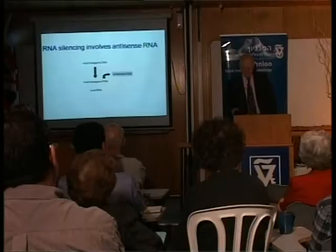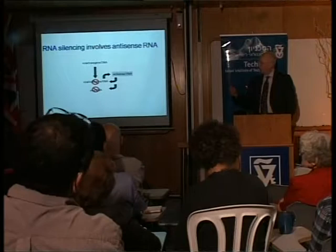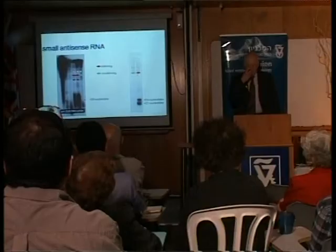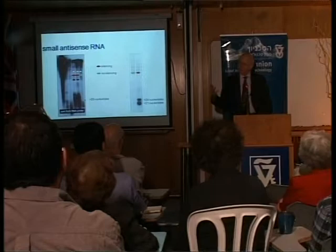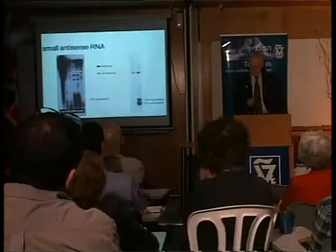We then started looking for that RNA. About that time, Andrew Hamilton joined the lab—a very talented postdoc—and he worked at this for a long time. Initially we couldn't find anything, but we knew this antisense RNA had to be there. Eventually we realized it was running off the bottom of the gel. It was a very small molecule, smaller than we had initially anticipated.